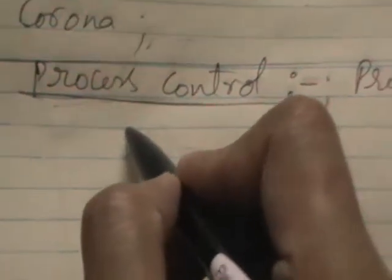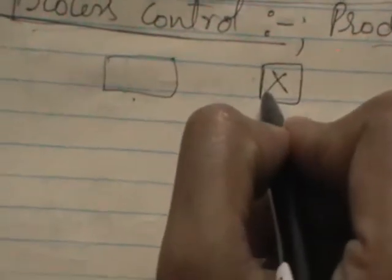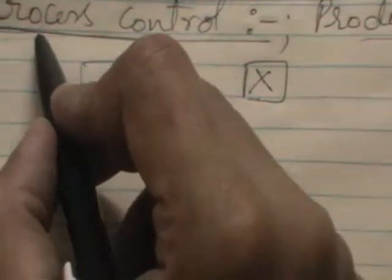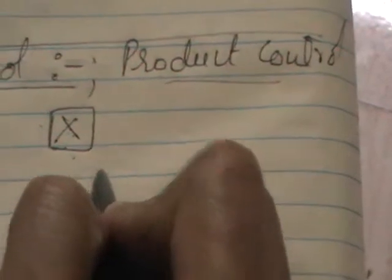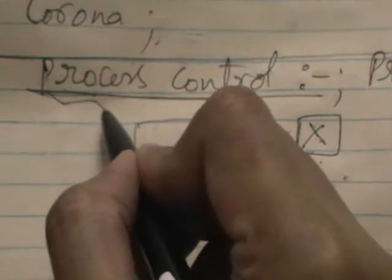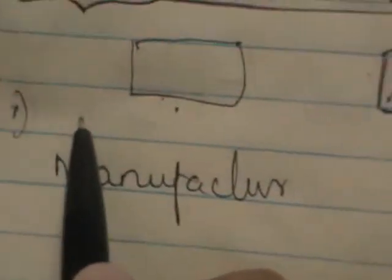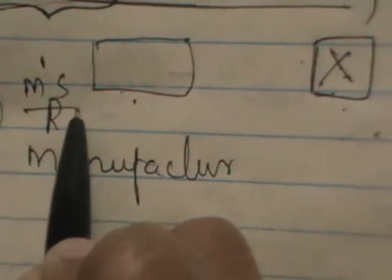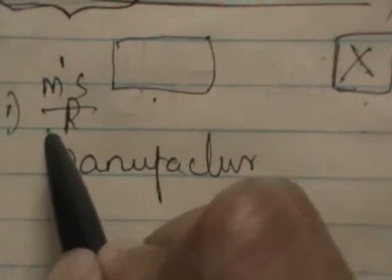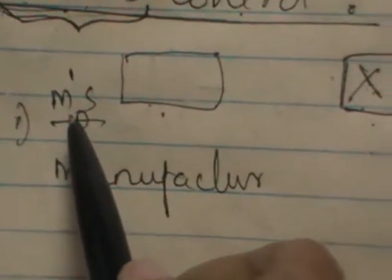If you consider any manufacturing industry, let us say that product X is being manufactured. During the process only, you can control the variability of item X. Or after the item is ready, we can also control the variability in the product. The process means during the manufacturing stage — from the time of arrival of the raw material till the packing of the item is done. We call that as process time.